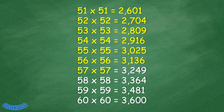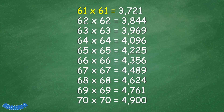57 times 57 equals 3,249. 58 times 58 equals 3,364. 59 times 59 equals 3,481. 60 times 60 equals 3,600. 61 times 61 equals 3,721. 62 times 62 equals 3,844. 63 times 63 equals 3,969. 64 times 64 equals 4,096.